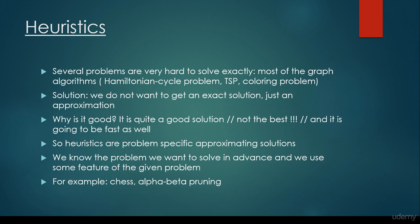Heuristics are problem-specific approximating solutions. It's very important that we know the underlying problem, and we are going to construct the heuristic algorithm accordingly. We have already considered a heuristic algorithm — the so-called A-star search — where we know we are doing a search algorithm and we would like to find the shortest path on a given graph. Chess or tic-tac-toe also fall into this category, and that's why the solution is going to be alpha-beta pruning. Solving tic-tac-toe and chess with the help of alpha-beta pruning is a heuristic algorithm because we know the feature of the given problem and that's why we are able to construct the problem-specific algorithm.